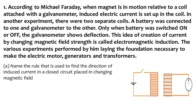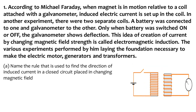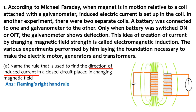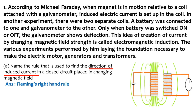The first question is: name the rule that is used to find the direction of induced current in a closed circuit placed in a changing magnetic field. There are three rules that we study in this chapter, and the one that helps you identify the direction of induced current is Fleming's right hand rule. So the answer is Fleming's right hand rule.